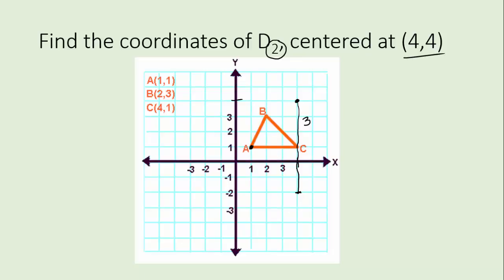The horizontal distance will be twice as far as the current horizontal distance. The current horizontal distance from the center over to A is three. If we double that and go six units, we get all the way over here. Where those two distances meet, that's going to be A prime. The coordinates of A prime are negative two, negative two. Notice that you can't get that by taking the original coordinates and just multiplying by two.